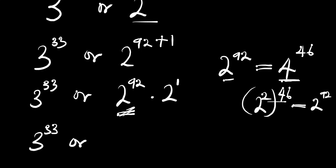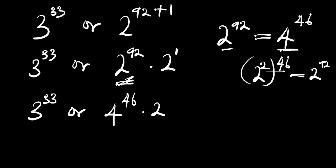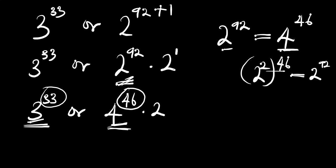Now we can compare: we have 3 to the power of 33 versus 4 to the power of 46 times 2. The exponent on the right is bigger than the exponent on the left, and the base on the right is bigger than the base on the left. So it's obvious that 4 to the power of 46 is already bigger than 3 to the power of 33, and we are also multiplying by 2 — so 6 to the power of 93 is far bigger. Thank you and goodbye.